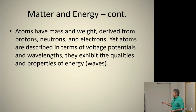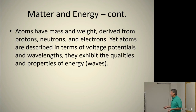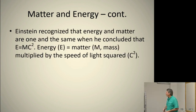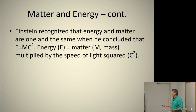Atoms have mass and weight derived from protons, neutrons, and electrons, but atoms are described in terms of voltage potential and wavelengths. They exhibit the qualities and properties of energy. Einstein recognized that energy and matter are one in the same when he concluded that energy equals matter multiplied by the speed of light squared.